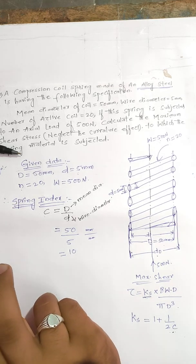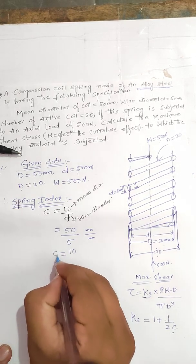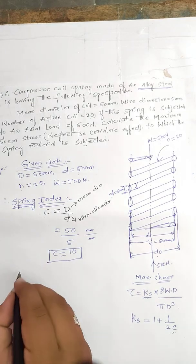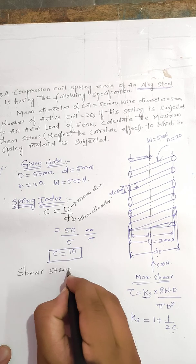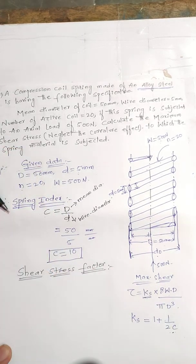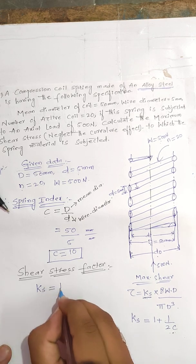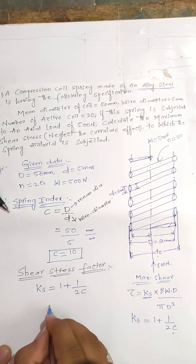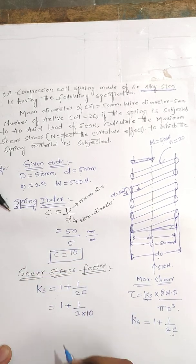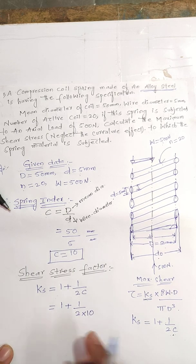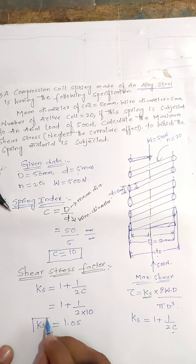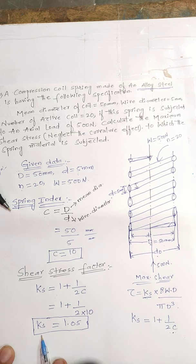After getting the value of c, we substitute into the shear stress factor formula: Ks = 1 + 1/(2 × c) = 1 + 1/(2 × 10). Dividing gives a value of 1.05. So the shear stress factor Ks = 1.05.